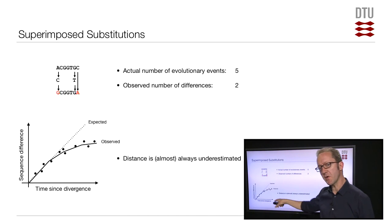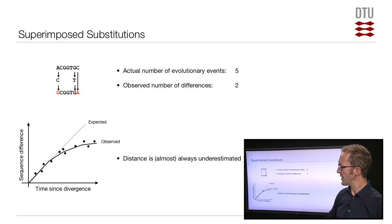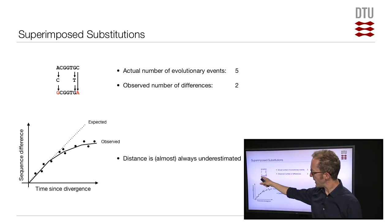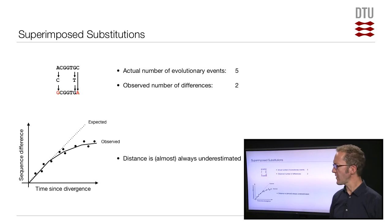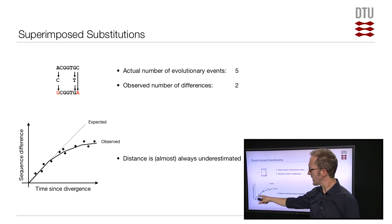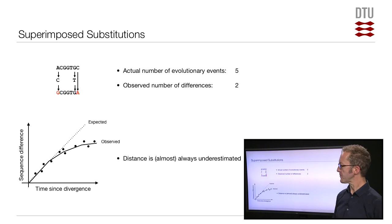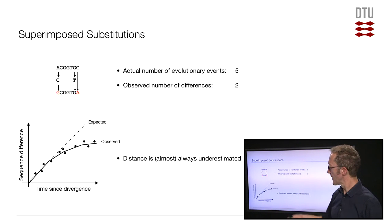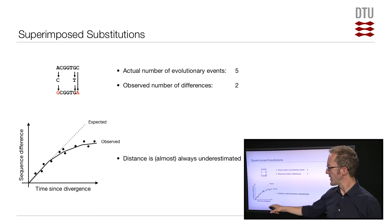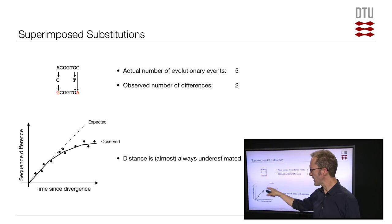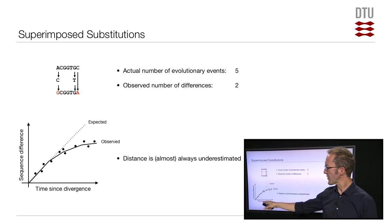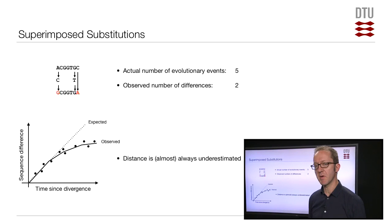If we make a plot with time since sequences diverged on the x-axis and the actual sequence difference on the y-axis, you can see that the distance will not rise linearly — it will taper off and hit a maximum value. Distances can't go above 100%, so there is that limit. The relationship between observed and expected difference is not completely random; there are regularities, as indicated by the shape of this curve.